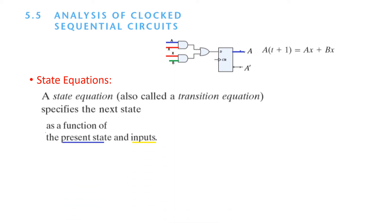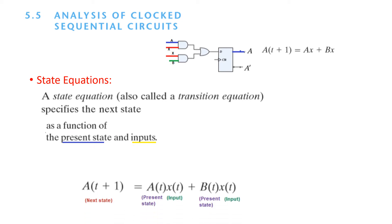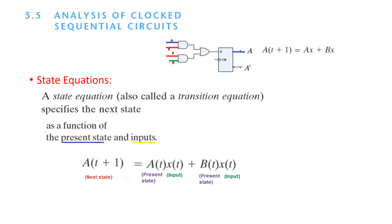A state equation, also called a transition equation, specifies the next state as a function of the present state and the input. So A⁺ = AX + BX, where A is the present state of flip flop A and X is the input signal. Similarly, B is the present state of another flip flop and X is the input.